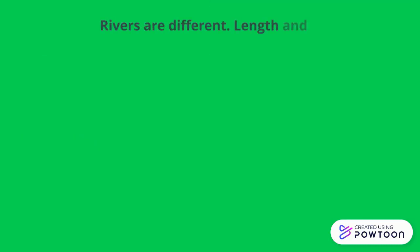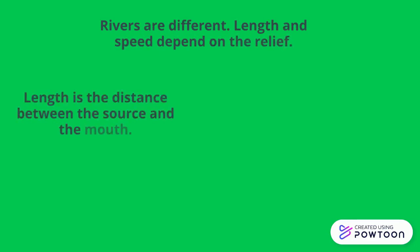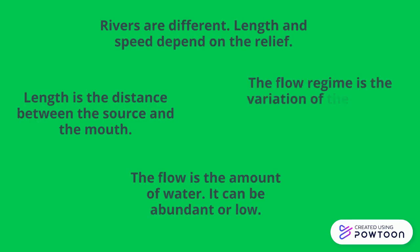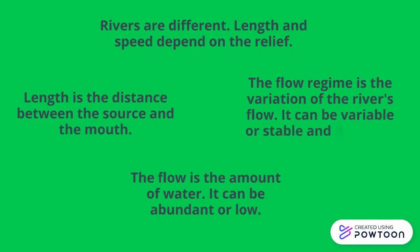Rivers are different. Length and speed depend on the relief. Length is the distance between the source and the mouth. The flow is the amount of water — it can be abundant or low. The flow regime is the variation of the river's flow; it can be variable or stable, and it depends on the climate.